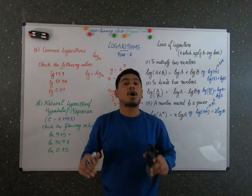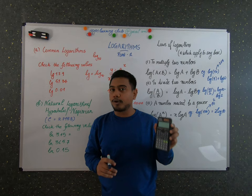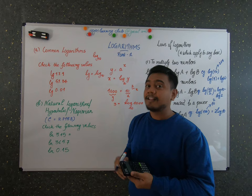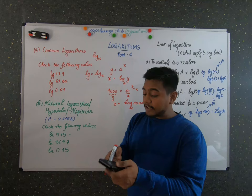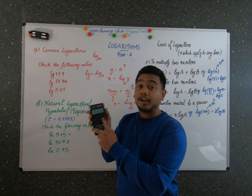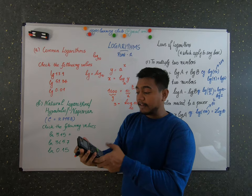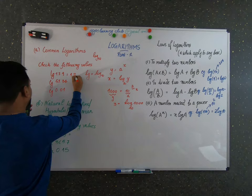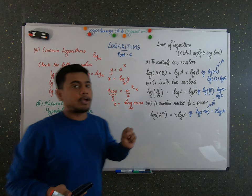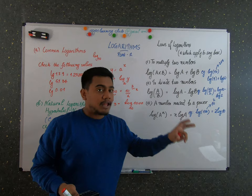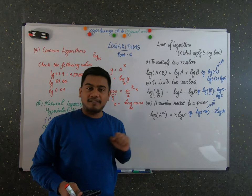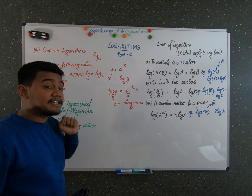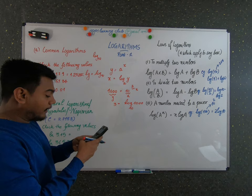Let's do some problems. You can use a scientific calculator or a logarithmic table book. I'm using a scientific calculator. First, find log of 17.9: press log, enter 17.9, and you get 1.25285. Next, find log 51.34, which gives 1.71045.